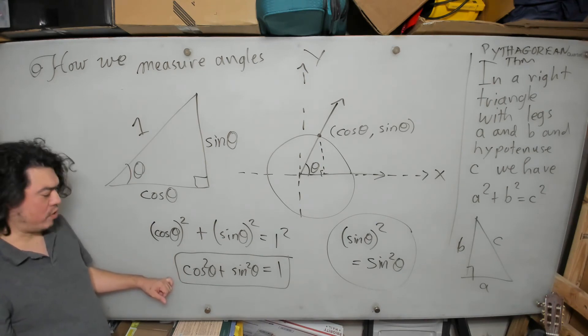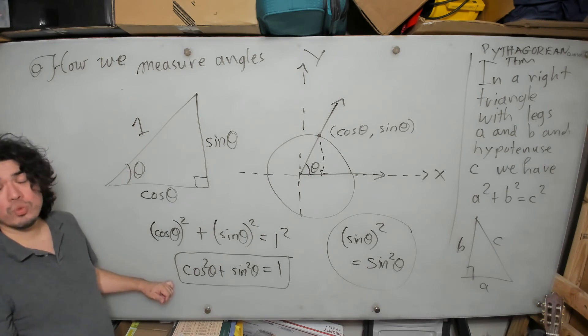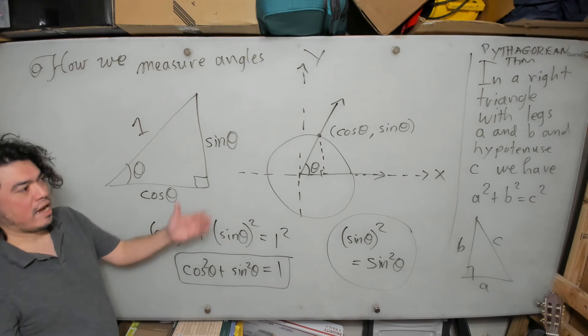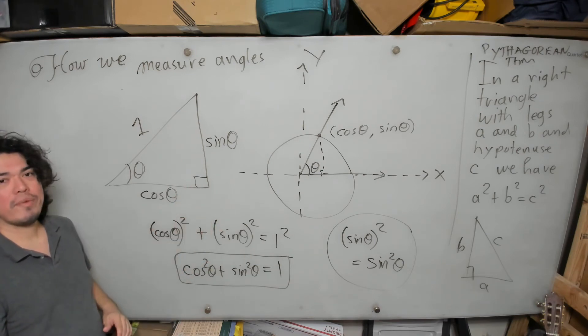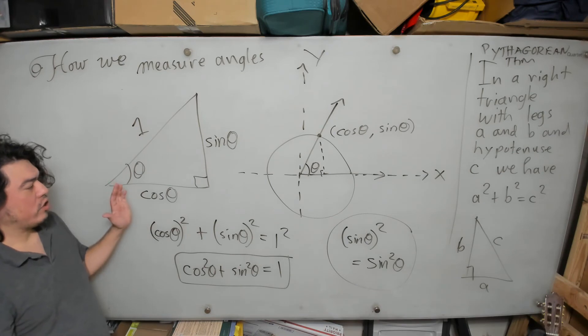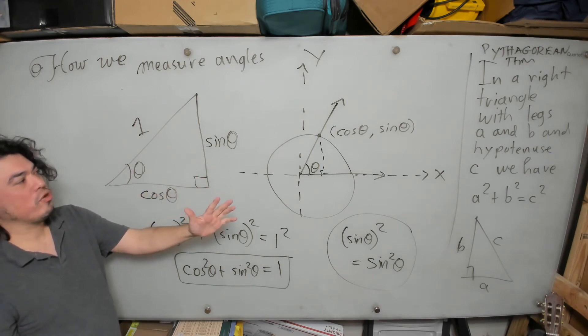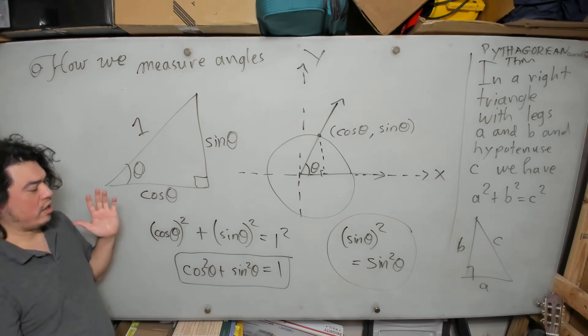And so here we have an identity that is satisfied by the trigonometric functions sine and cosine. This is known as one of the Pythagorean identities, and now you can see why it's called that, because it's a restatement—or it's not a restatement because it's not as general as the Pythagorean theorem—but the Pythagorean theorem directly applied to this triangle, which corresponds to the situation at hand, gives us this identity.